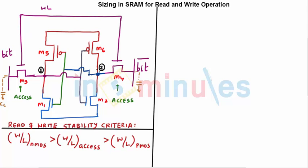We know that the read and write stability criteria requires W/L of NMOS to be greater than W/L of the access transistor, which in turn should be greater than W/L of PMOS. Because the circuit is symmetric, the same applies to both halves. On the bit and bit-bar lines, a capacitor CC is connected — this represents the capacitance from all cells connected in a column in a memory array.